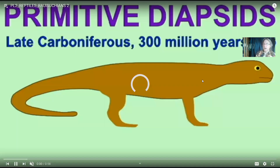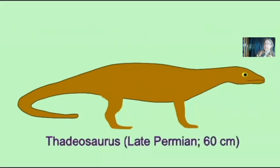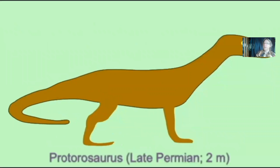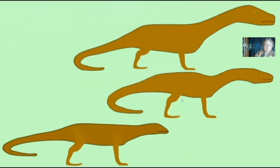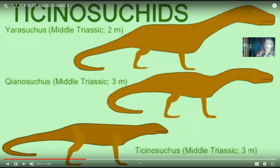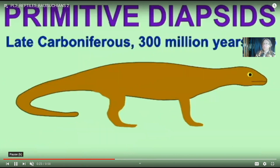There were other archosaur groups in the Triassic as well. The aetosaurs were herbivores with bony armor — they looked like armored dinosaurs in many ways, with some middle Triassic forms reaching six to nine feet long. But they too became extinct at the end of the Triassic period. From the earlier forms came even larger groups — the Rauisuchians.